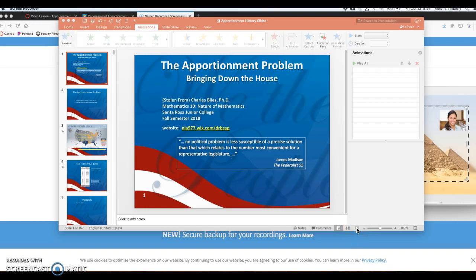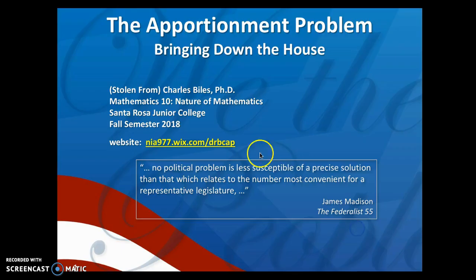In this video series we're going to go over the apportionment problem of the United States, which is how to apportion each state a fair number of representatives for the House of Representatives that depend on each state's population.